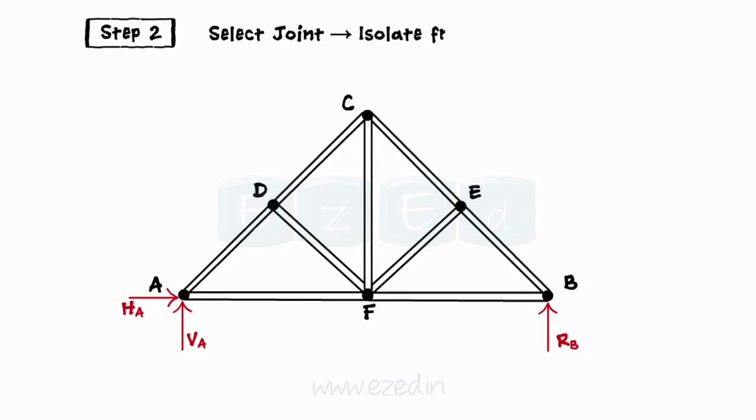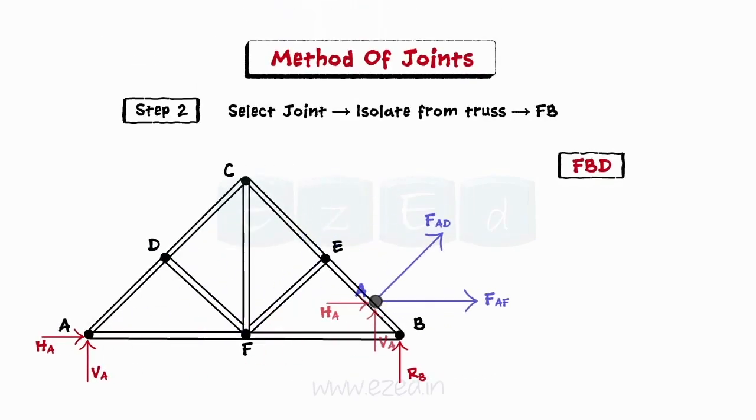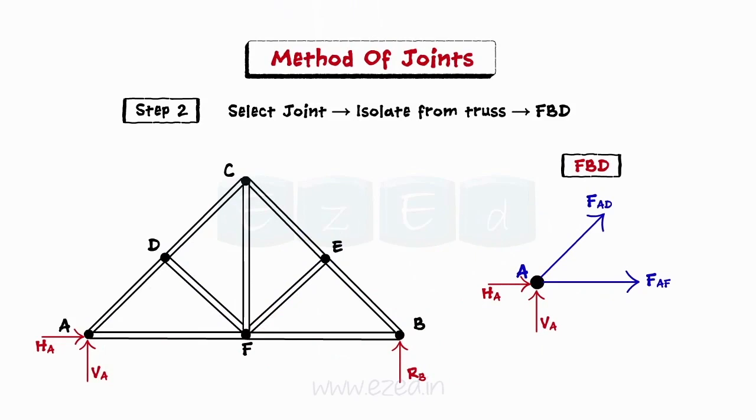Isolate the selected joint from the truss and draw its free body diagram. We select joints with only two unknown members as only two conditions of equilibrium can be applied to analyze a joint.